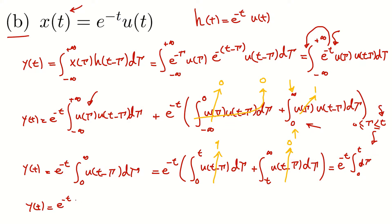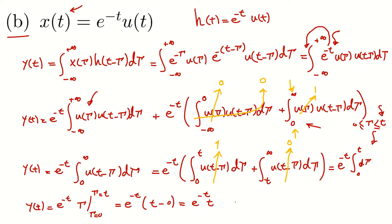So y(t) equals e^(-t) times the integral from zero to t of dτ. The integral of dτ is τ, evaluated from τ = 0 to τ = t. This gives e^(-t) times (t - 0), which equals t · e^(-t), and this is for t positive.